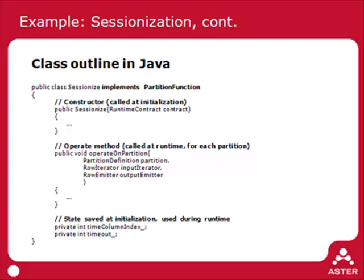There are going to be many instances of this function running throughout the cluster in parallel. So even though this function can be written sequentially, it will be transparently parallelized across the cluster to take advantage of all the machines in the system. At the bottom of the class, we have the state to save from initialization: the index of the time column, and the timeout that specifies how long to allow between clicks before considering a new session to have started.